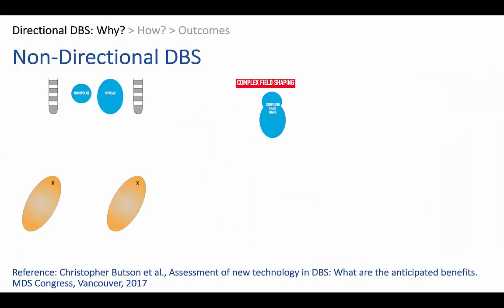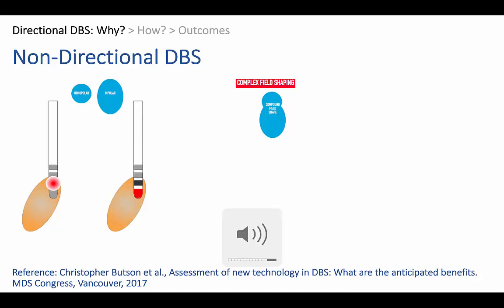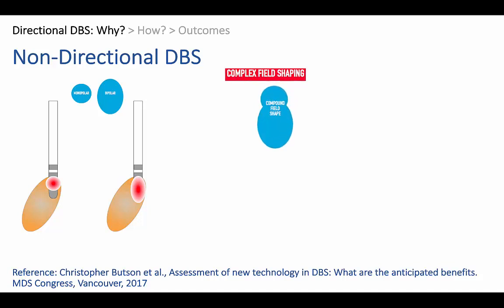To understand this a little bit better, if you imagine a lead aimed at target X and you do monopolar stimulation or a bipolar montage, you produce fairly regular electric fields — spherical or ovoid electric fields. Now if that doesn't do enough in terms of therapeutic benefit, you might want to produce a complex field shape, or a compound field shape, because effectively these are produced by compounding the simpler field shapes.